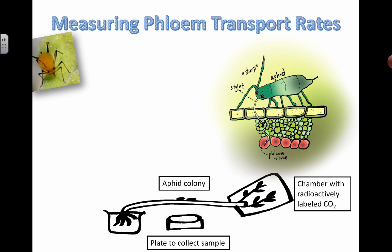The reason this story is sad is because we've taken advantage of this system, and this can introduce all kinds of questions about ethics in science. The sad thing that happens is we cut the stylet off of this poor little aphid. The stylet gets stuck in the plant, and as a result phloem fluid will actually continue to pour out and you can measure it — it's like a little straw. We're taking advantage of the bug's ability to penetrate deep into the phloem tissue.